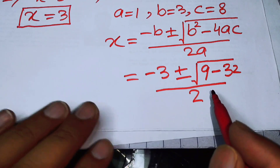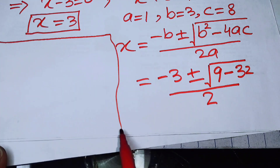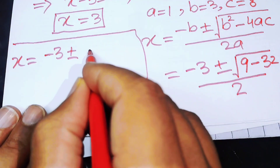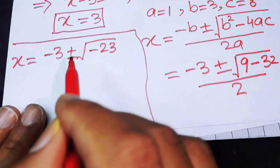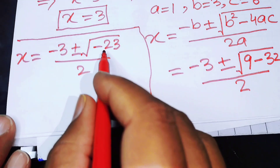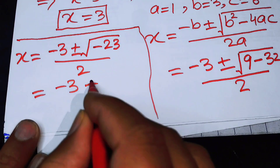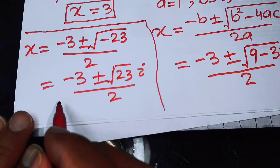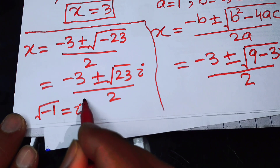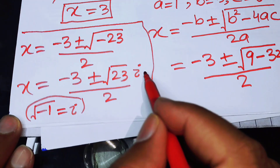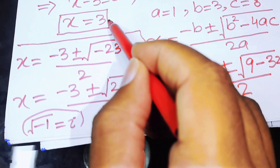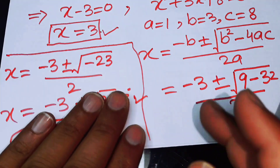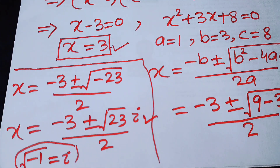Solving this, we get x equals minus 3 plus or minus the square root of minus 23, over 2. Since the square root of minus 1 equals iota, this becomes minus 3 plus or minus the square root of 23 times iota, over 2. So the final answers are: x equals 3 as the first root, and x equals minus 3 plus or minus root 23 times iota over 2 as the other two roots. Thank you for watching — please subscribe for more exciting videos.